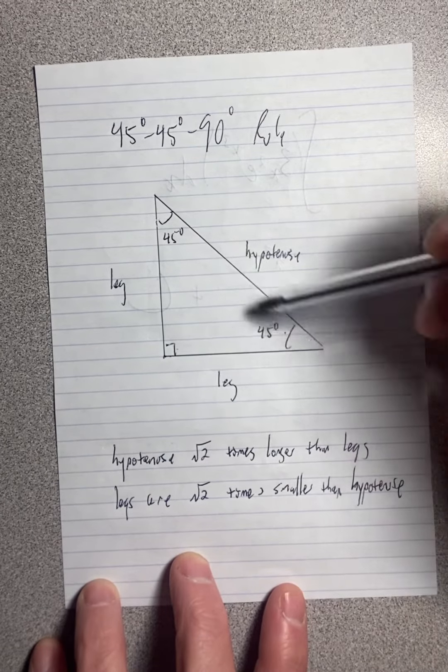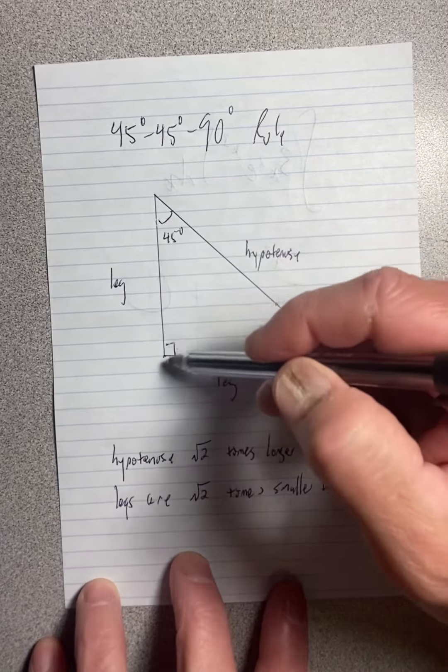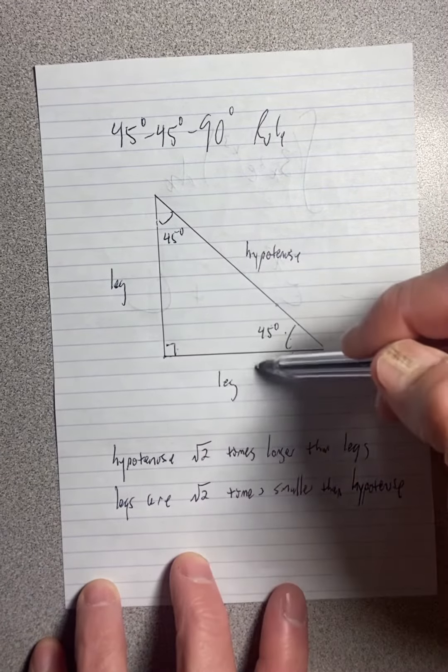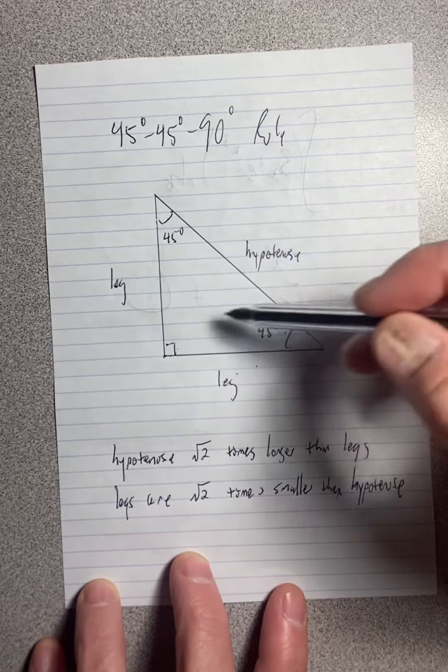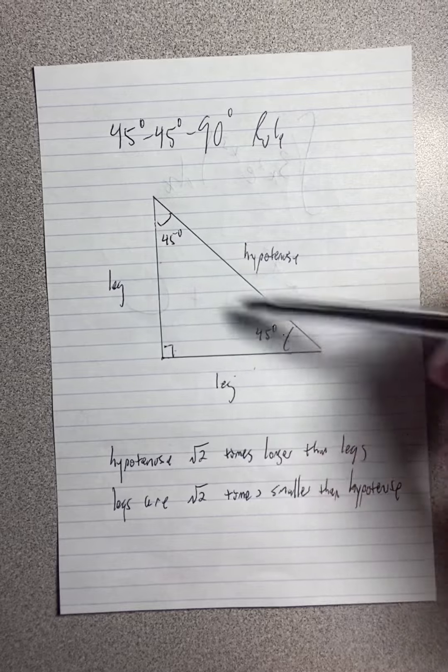And if the base angles are equal, then the sides are equal. So these two sides are equal. So the two legs are equal to one another in a 45-45-90. And isosceles means at least two sides are equal.